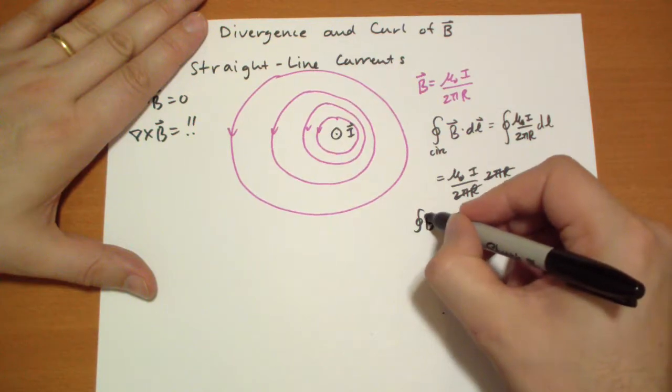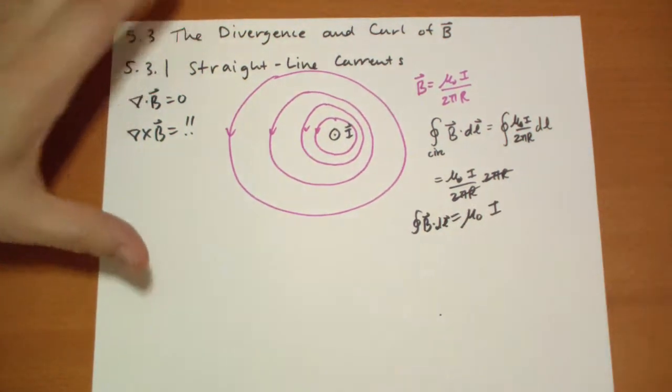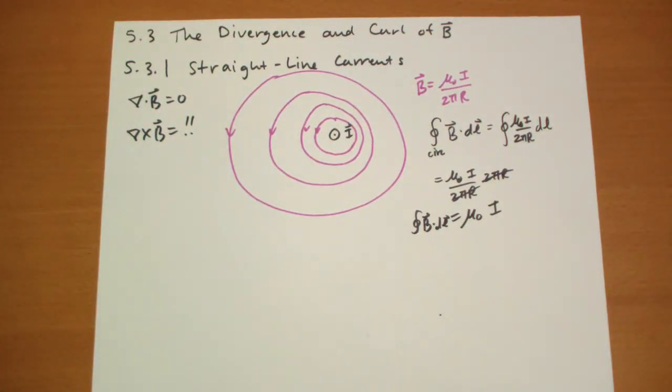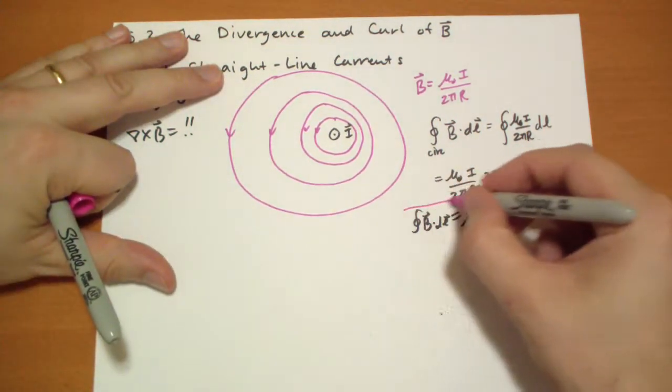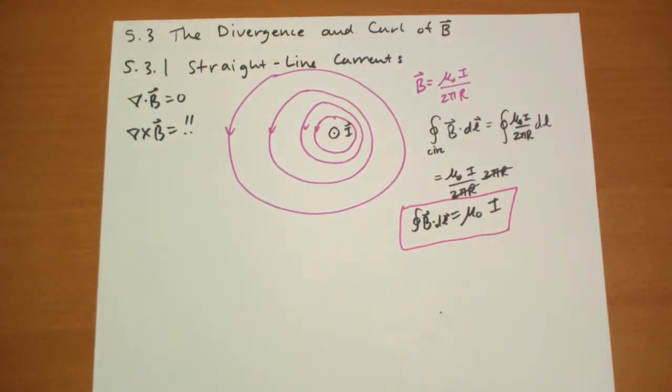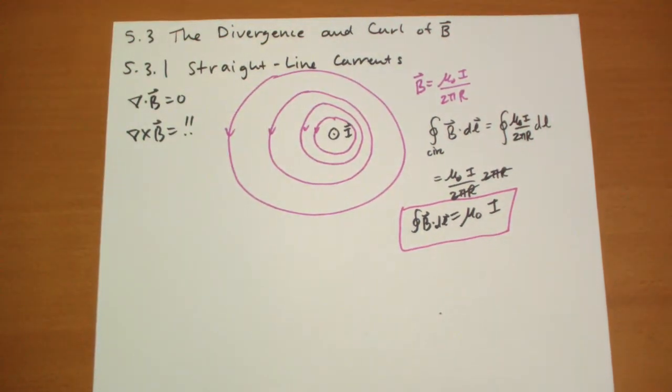So the integral along the circle of B vector dot DL vector is μ₀I. And we just calculated that for circles. The question is, does this work for other shapes? And what happens when we draw a shape that doesn't enclose that current? Are we going to get the same answer or something different?